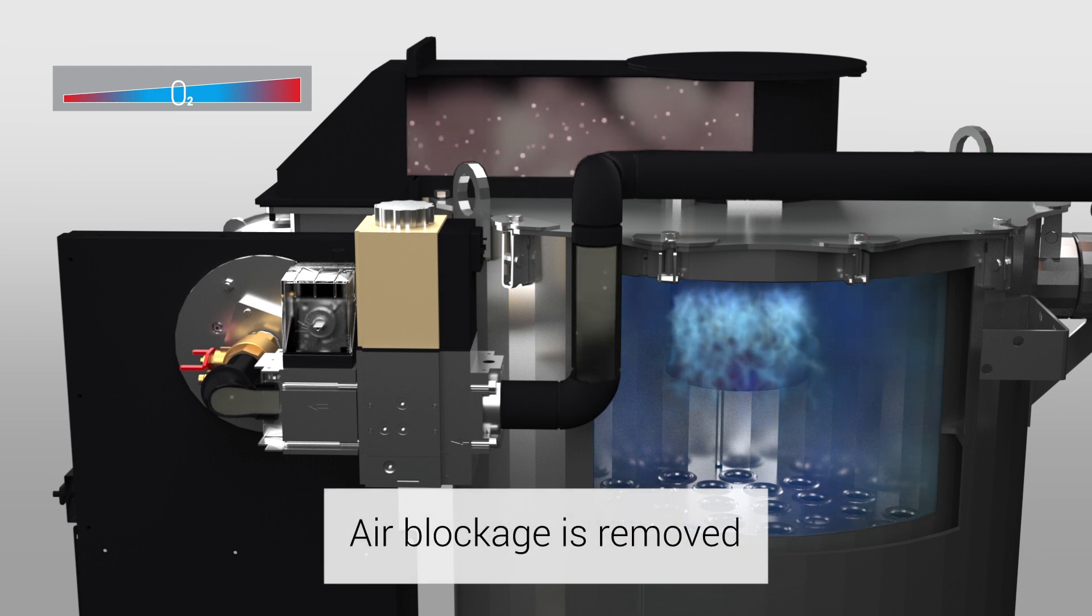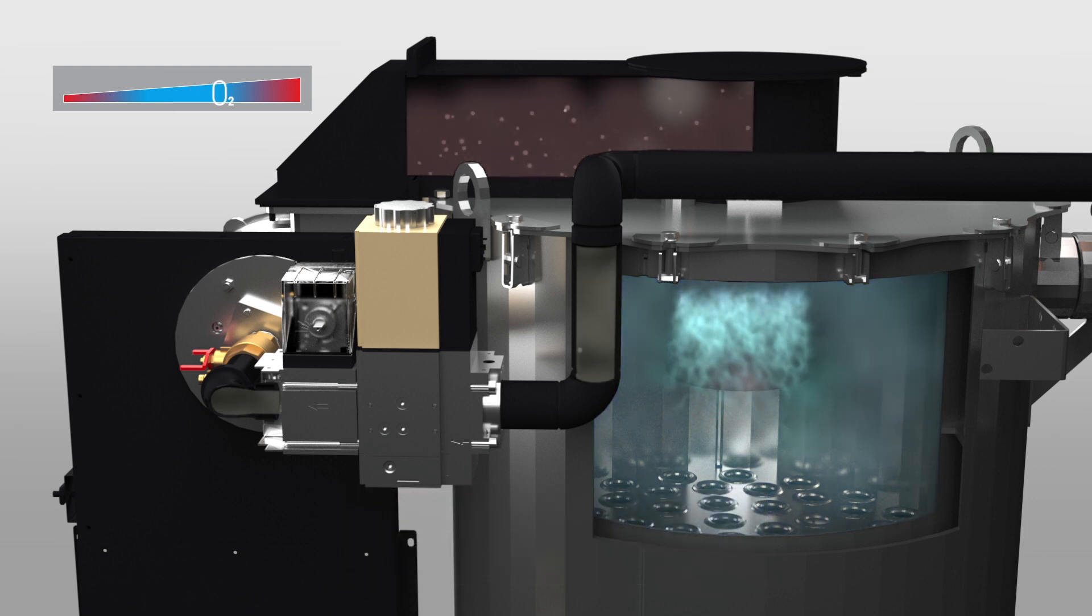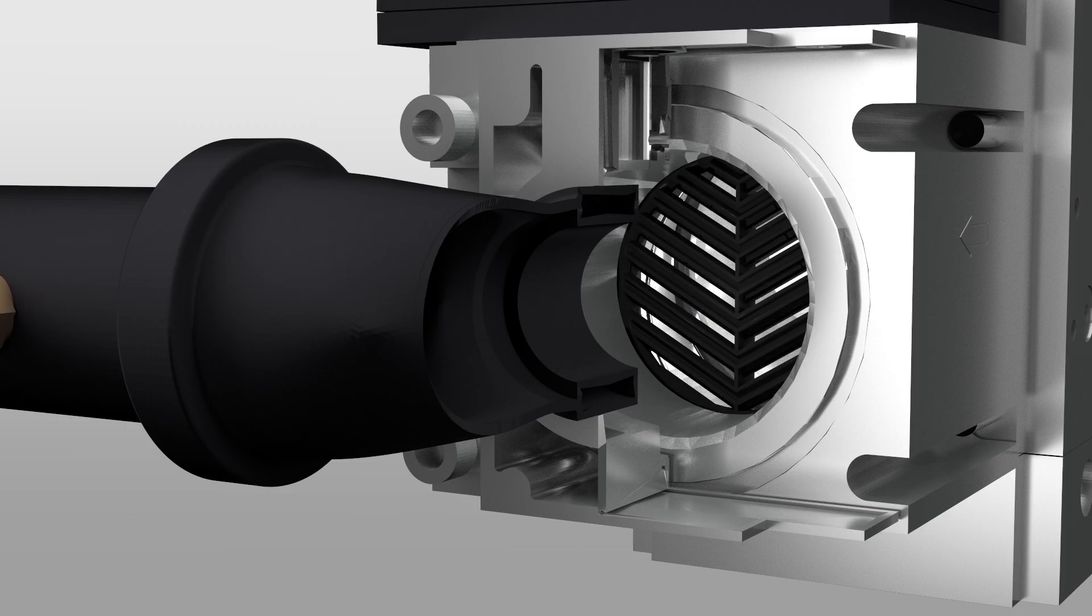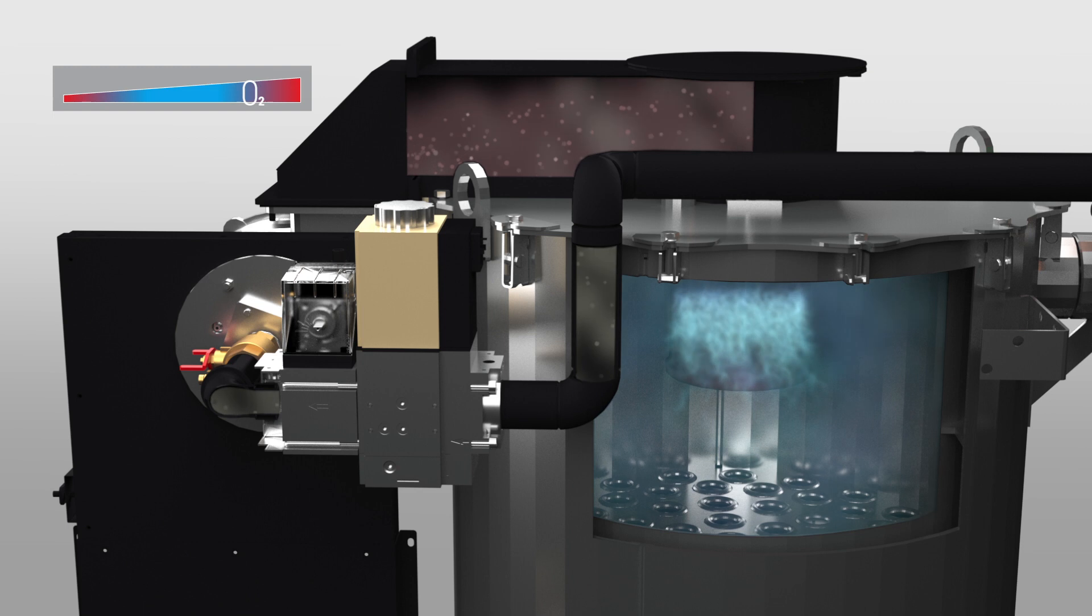When the air blockage is removed, the available combustion air will increase, as will the oxygen measurements in the flue gas. The hot system returns the gas flow to the best fuel air ratio condition again.